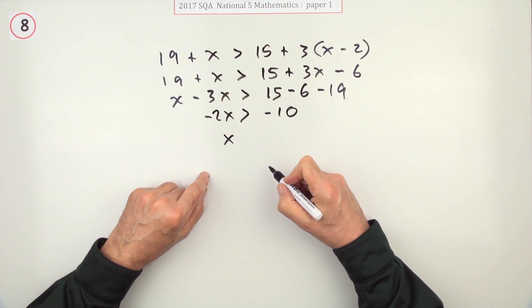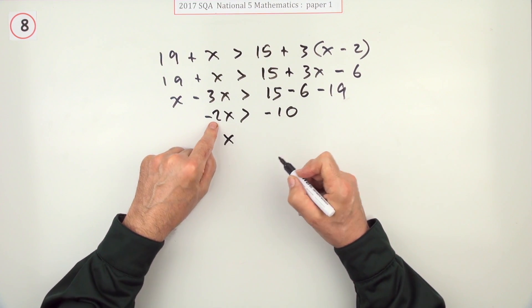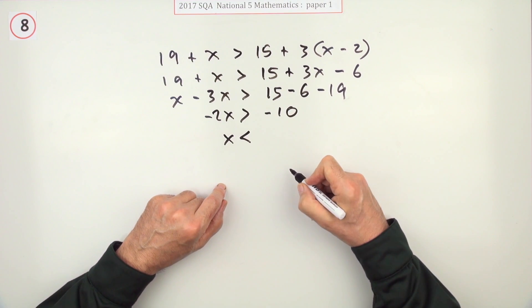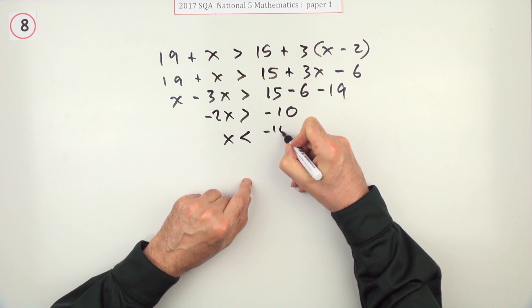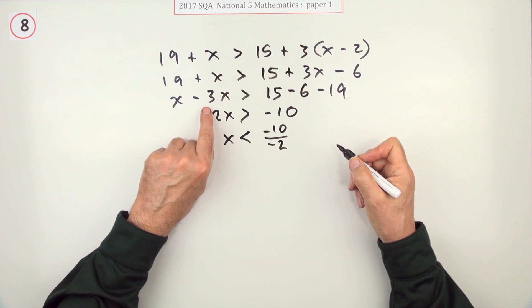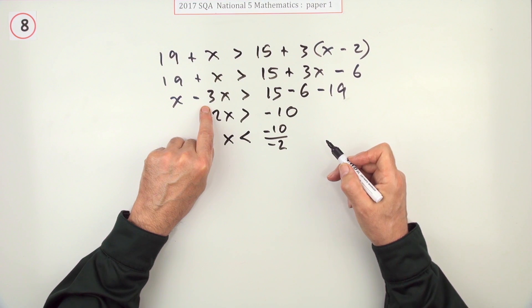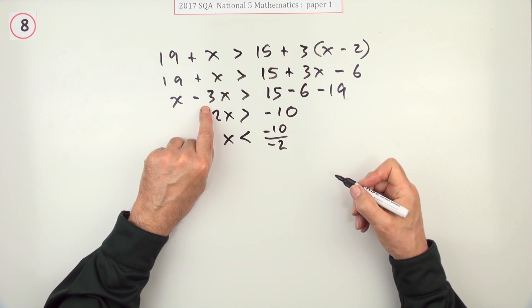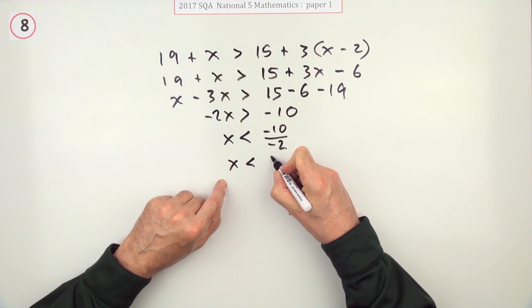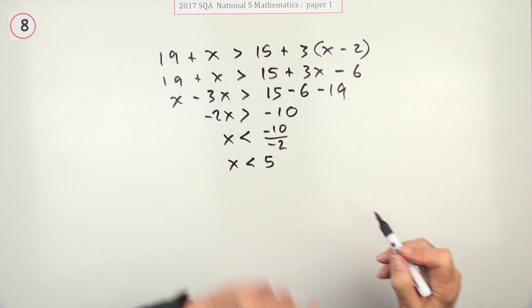Now, to get x on its own, you divide. But you're going to be dividing by a negative number. And that's where you have to make the change. So x is going to be less than negative 10 divided by negative 2. If you'd just been dividing by 2, that would have stayed greater than. But dividing by a negative number flips it around so your final answer is x has to be less than 5.